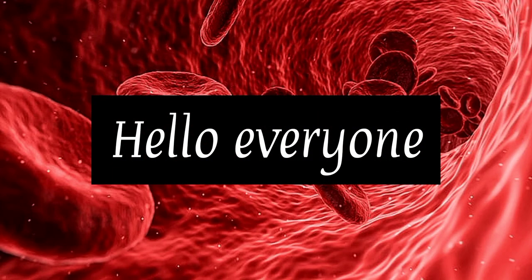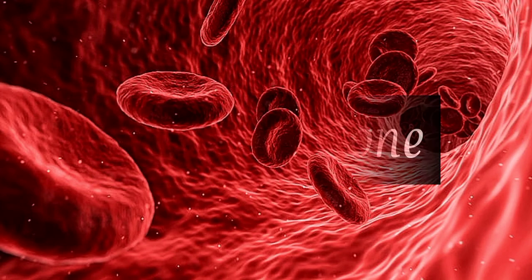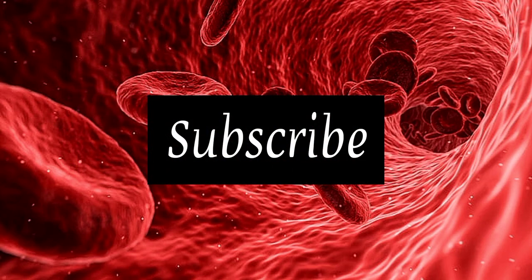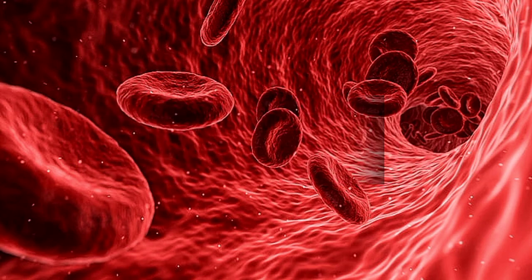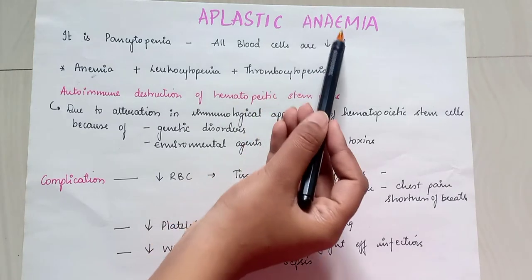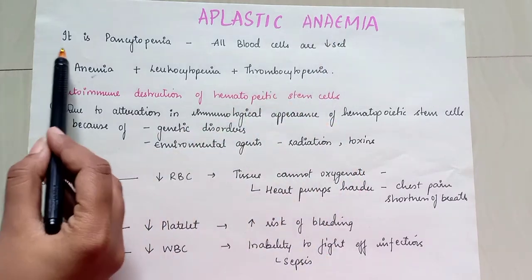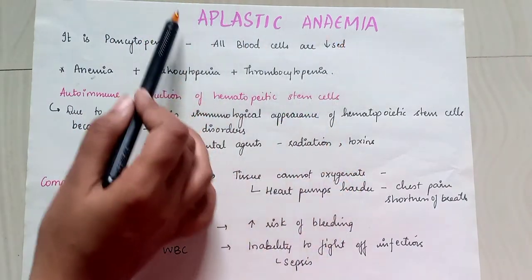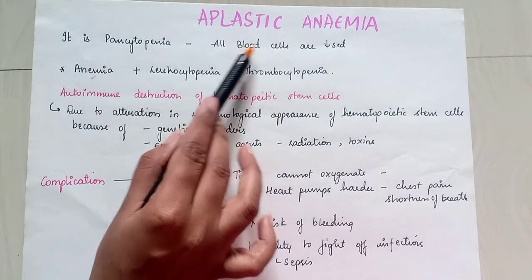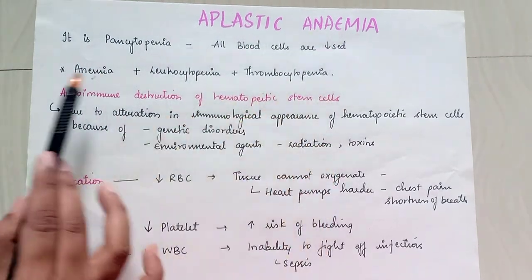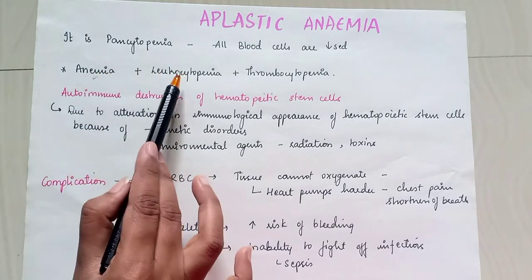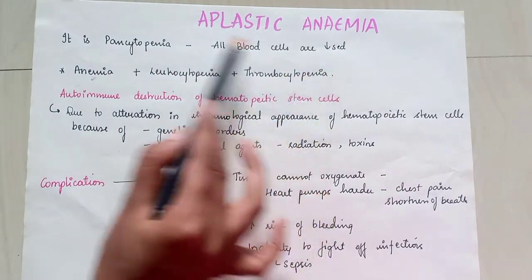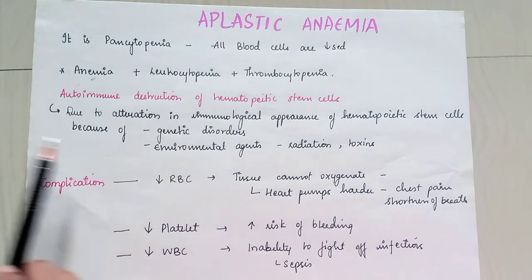Hello everyone. Welcome back to another chapter of hematology — that is aplastic anemia. Aplastic anemia is also known as pancytopenia, where all blood cells are decreased. Here you can see anemia, leukocytopenia, and thrombocytopenia, all of which are seen in aplastic anemia.